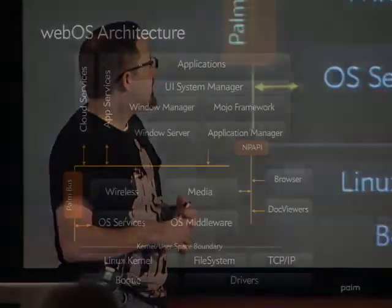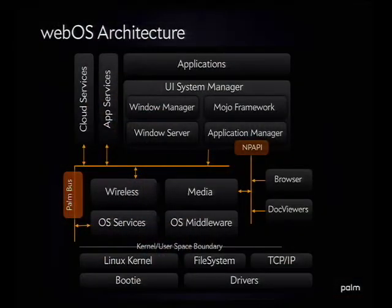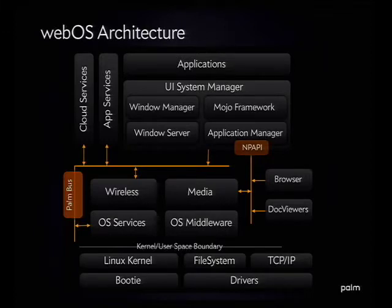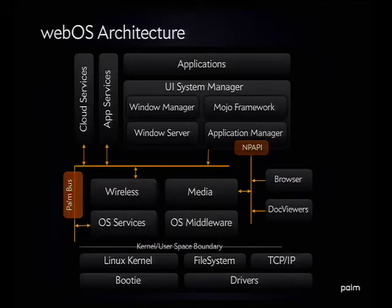This is our basic architecture. You don't need to write this down — we're going to put all the slides on the web. Essentially, the bottom half of the operating system is a Linux stack: Linux kernel, file system, TCP/IP, bog standard stuff. All of the actual services — playing media, the middleware — are primarily C-based services, which are exposed to the application developer through JavaScript APIs on our Palm bus. That's what gives you access to app services and the cloud services.